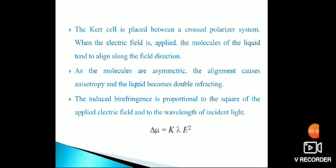The Kerr cell is placed between a crossed polarizer system. When the electric field is applied, the molecules of the liquid tend to align along the field direction. As the molecules are asymmetric, the alignment causes anisotropy and the liquid becomes double refracting. The induced birefringence is proportional to the square of the applied electric field and the wavelength of the incident light.